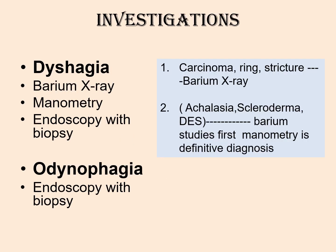There are three basic tests done for dysphagia and odynophagia: manometry, barium X-ray, and endoscopy. The barium X-ray is done first to see if the path is open before doing any instrumentation. Manometry identifies neuromuscular problems — that is achalasia, scleroderma, and diffuse esophageal spasm — while endoscopy is for carcinoma, ring, or stricture.